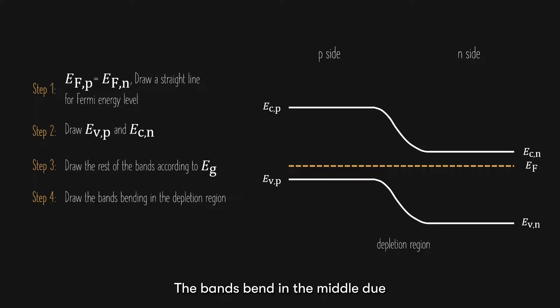The bands bend in the middle due to an electric field in the depletion region. Away from the junction, the bands do not know that there is a junction and hence remains flat. Now, some of you may wonder, why is the conduction and valence bands for both p- and n-type materials not at the same energy level?